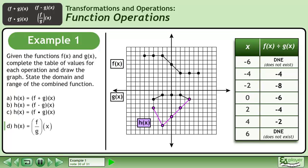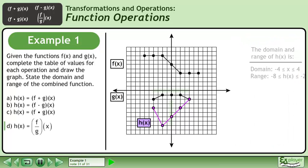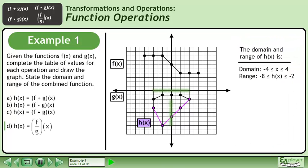We can now draw the graph of h. The domain of h is between negative 4 and 4 inclusive. The range of h is between negative 8 and negative 2 inclusive.